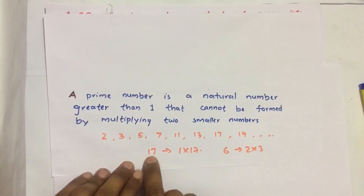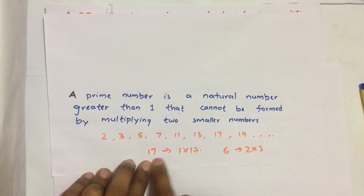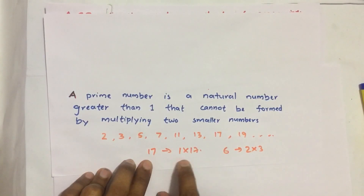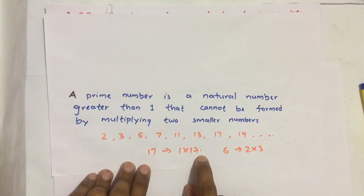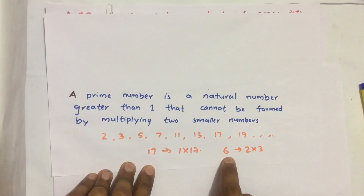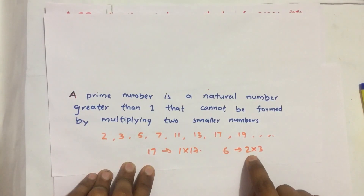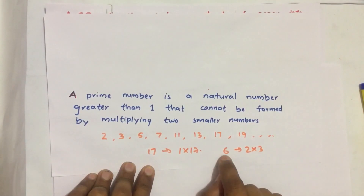Take one example: 17. We can write this as a multiple of only 1 and 17, so it is a prime number. Take another example: 6. We can write 6 as a multiple of smaller numbers 2 and 3, since 2 into 3 equals 6. So 6 is not a prime number.